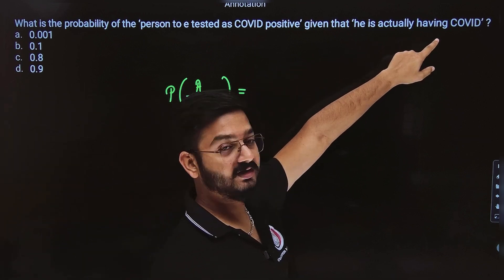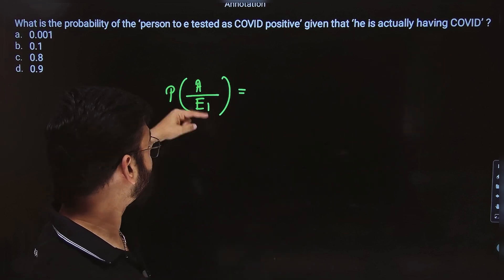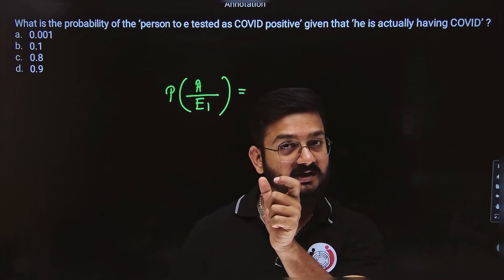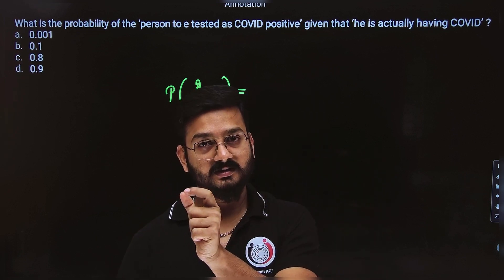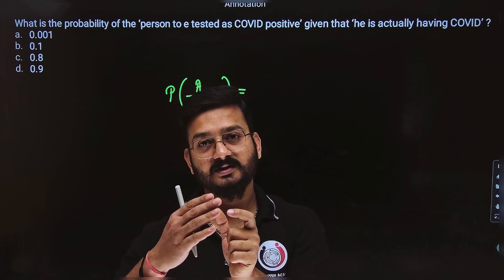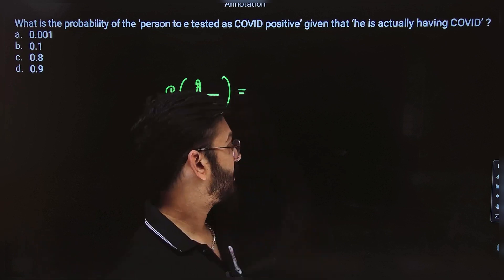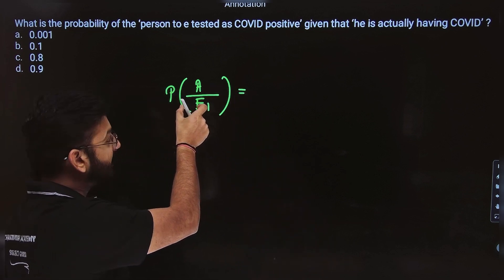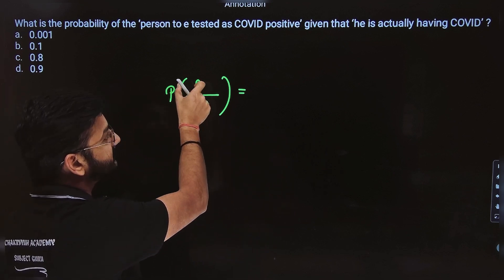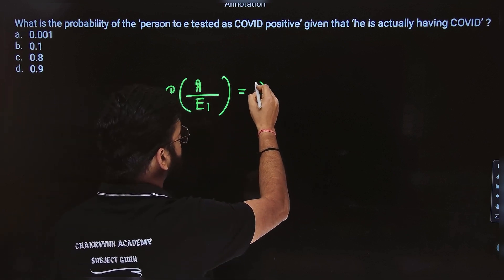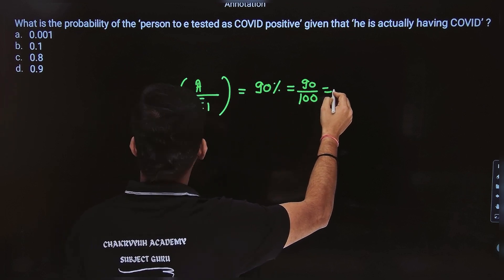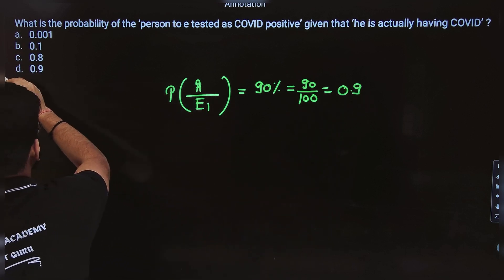The person is actually having COVID and is tested positive. So the answer is 90%, which is 90 by 100, equal to 0.9, which is option T. The important thing here is that you need to know how to write the probability in the form of these events. After that, the question is very simple.